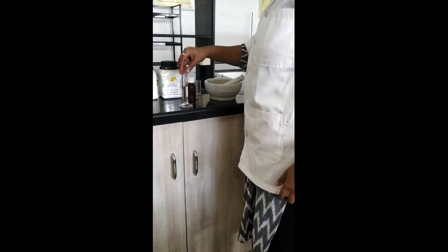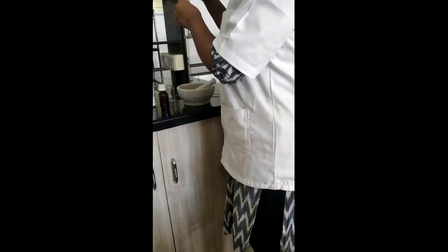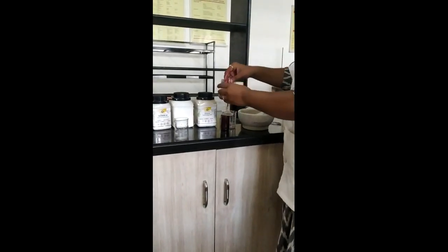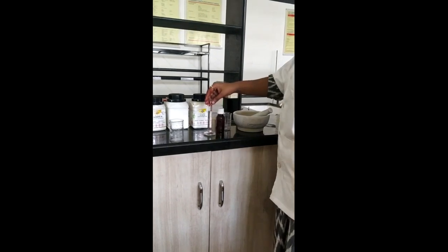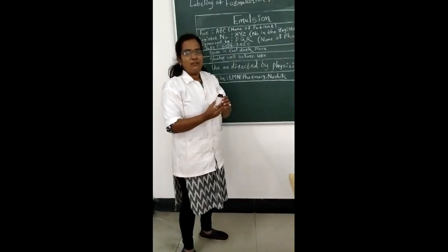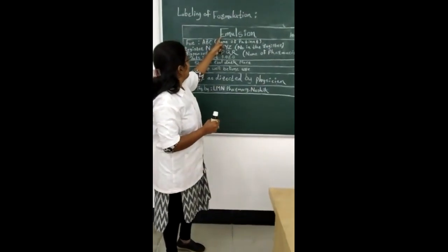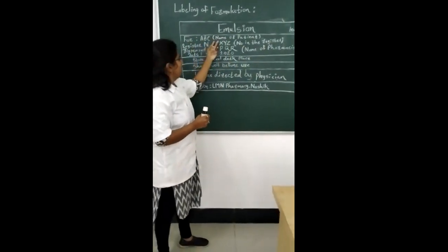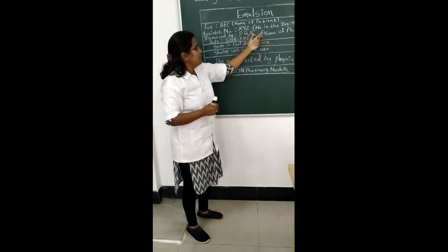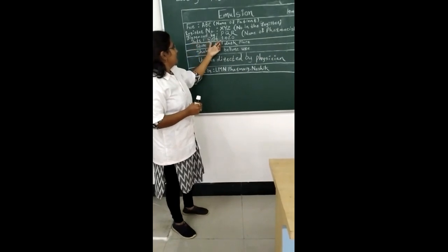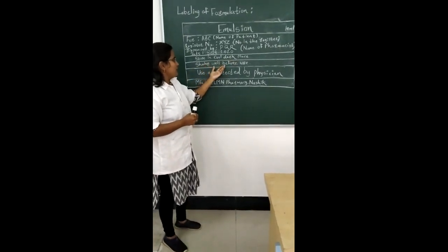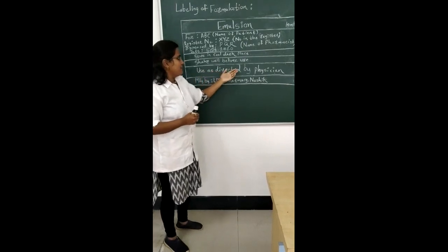After proper trituration, the emulsion is poured into a measuring cylinder and the volume is made up to 10 ml with cinnamon water. After volume makeup, the emulsion is transferred into a container. The labeling of the formulation: emulsion 10 ml, patient name ABC, register number XYZ, dispensed by pharmacist's name, manufacturing date September 2020, storage condition: store in a cool and dry place, direction: shake well before use, use as directed by physician.